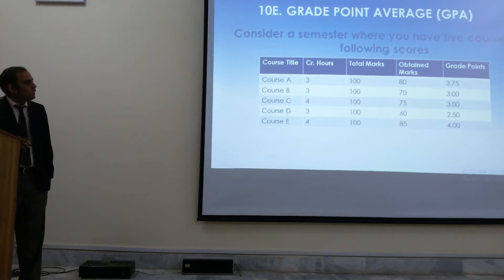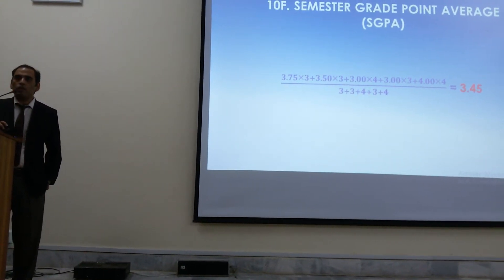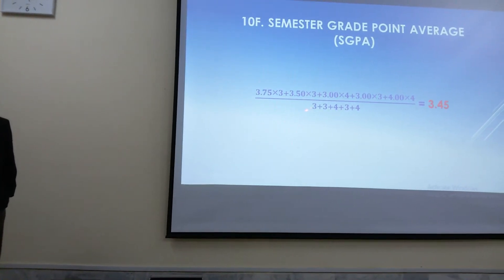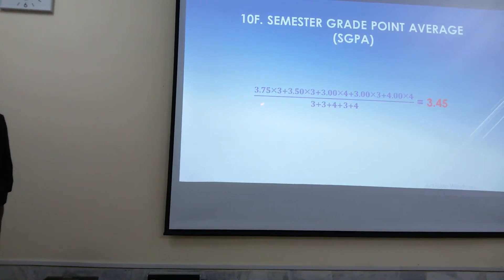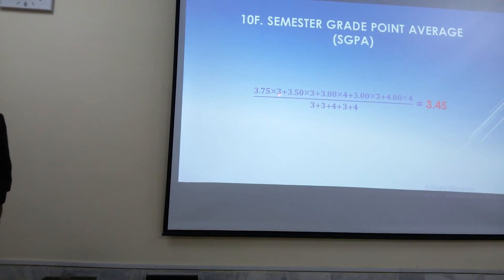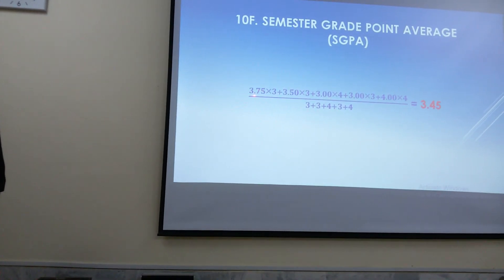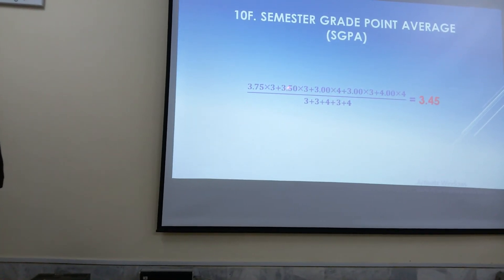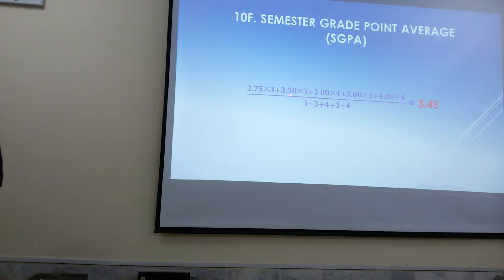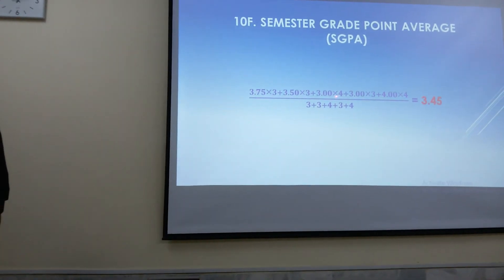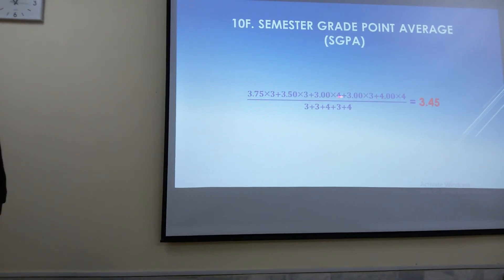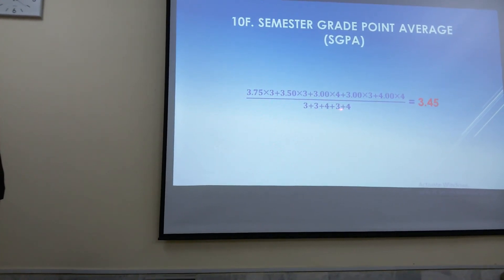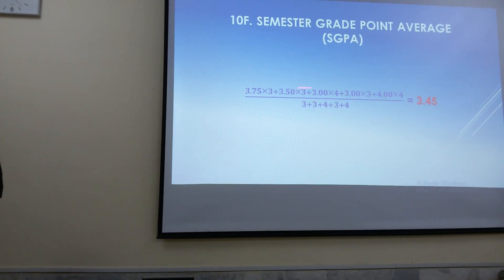The next step is to calculate their average. This average is calculated as follows: the first course had 80 marks, so the grade points were 3.75, and the credit hours were 3 — so you multiply the grade points with the credit hours. Then the next course: multiply its grade points by its credit hours, and so on for each course, and you add all of them. Then you divide by the total credit hours. So total credit hours were 3 plus 3 plus 4 plus 4 plus 4, and you calculate that sum.